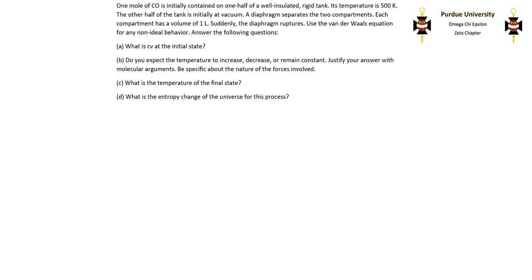I'm going to go through this example problem where we apply thermodynamic property relations to a closed system modeled by a non-ideal equation of state. One mole of carbon monoxide is initially contained in one half of a well-insulated rigid tank. The initial temperature is 500 Kelvin and it takes up a volume of one liter. On the other side there's another volume of one liter in a vacuum. The barrier between the two sides ruptures and all the gas equilibrates into the rest of the tank. The Van der Waals equation of state is used to model any non-ideal behavior.